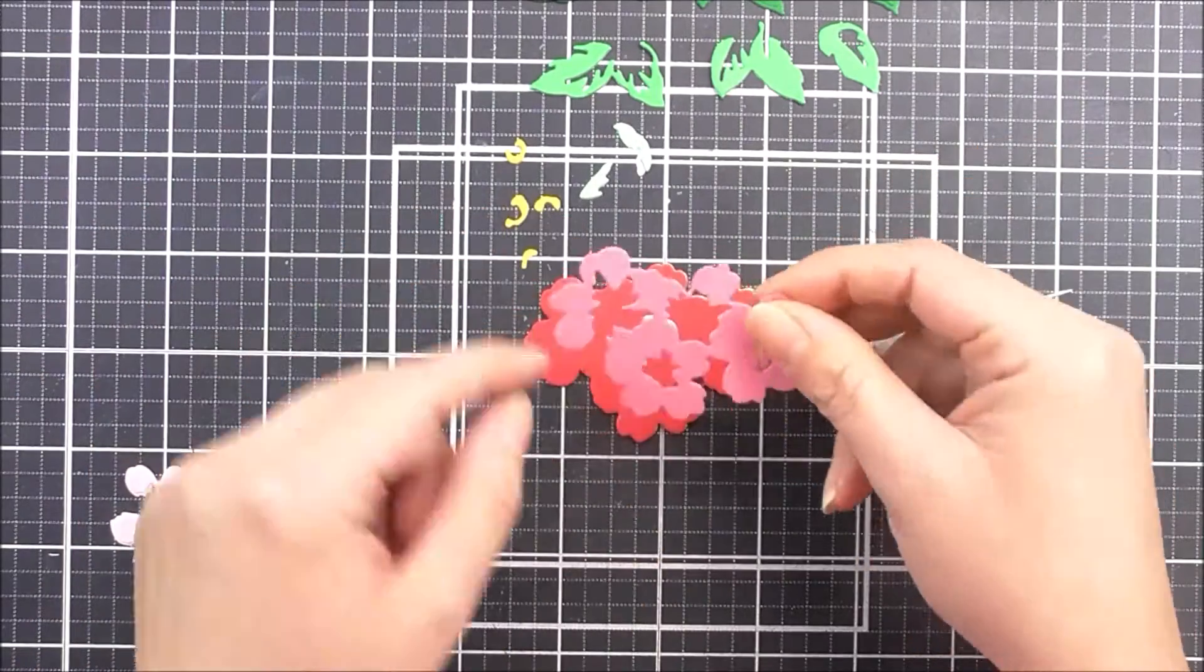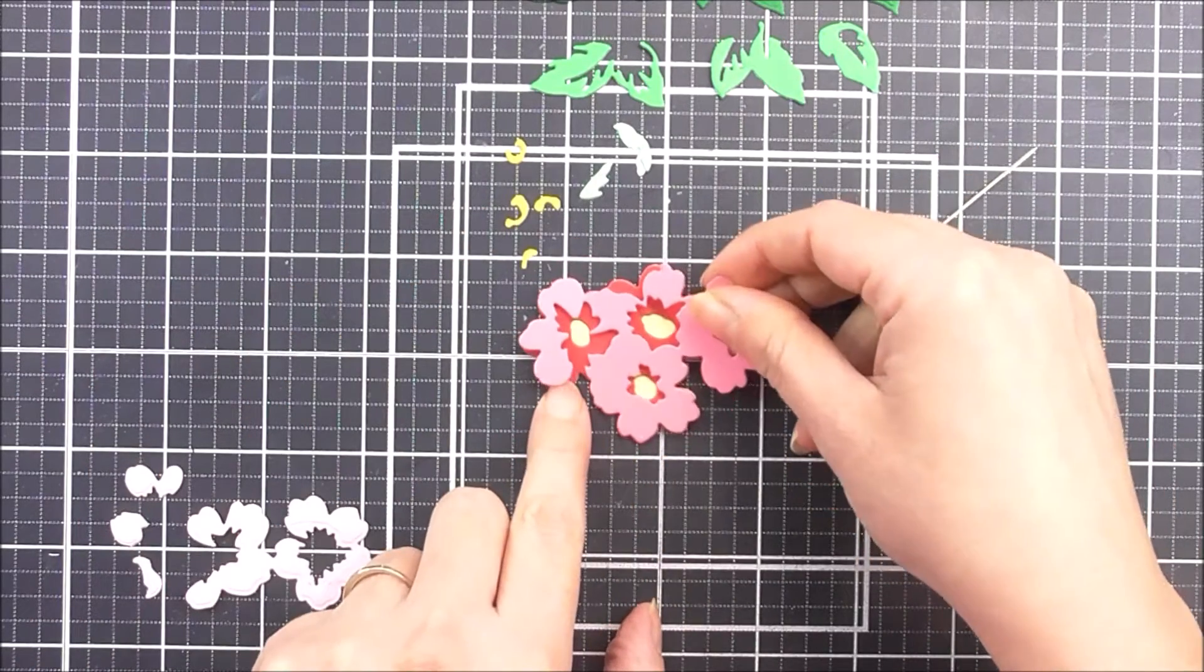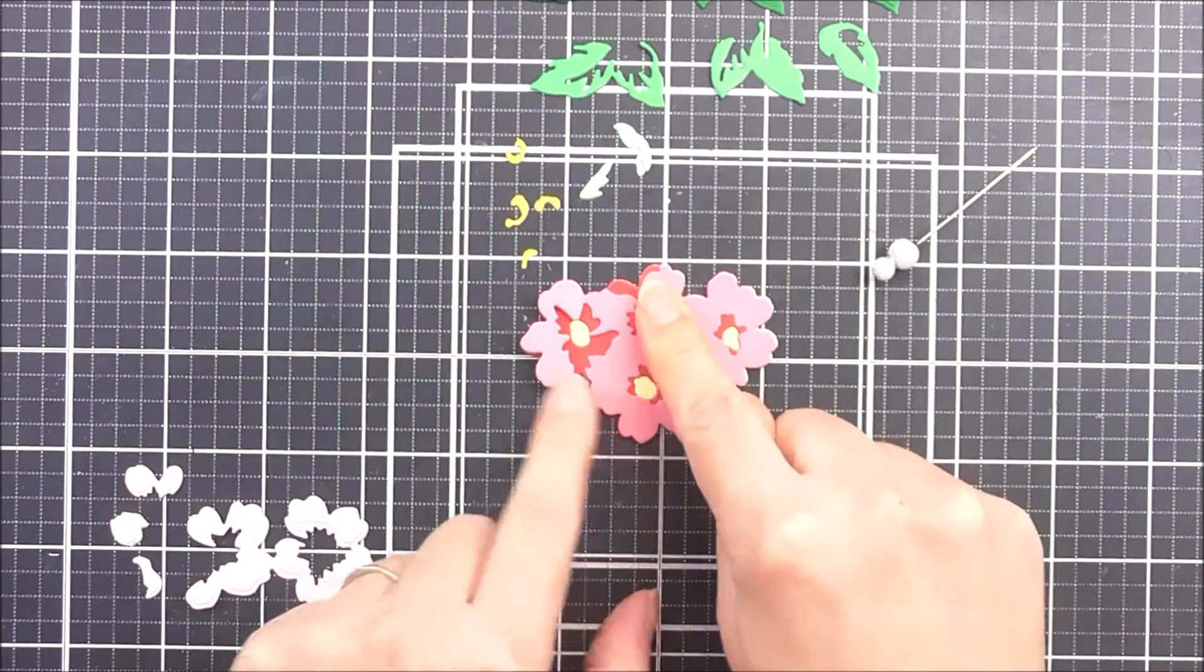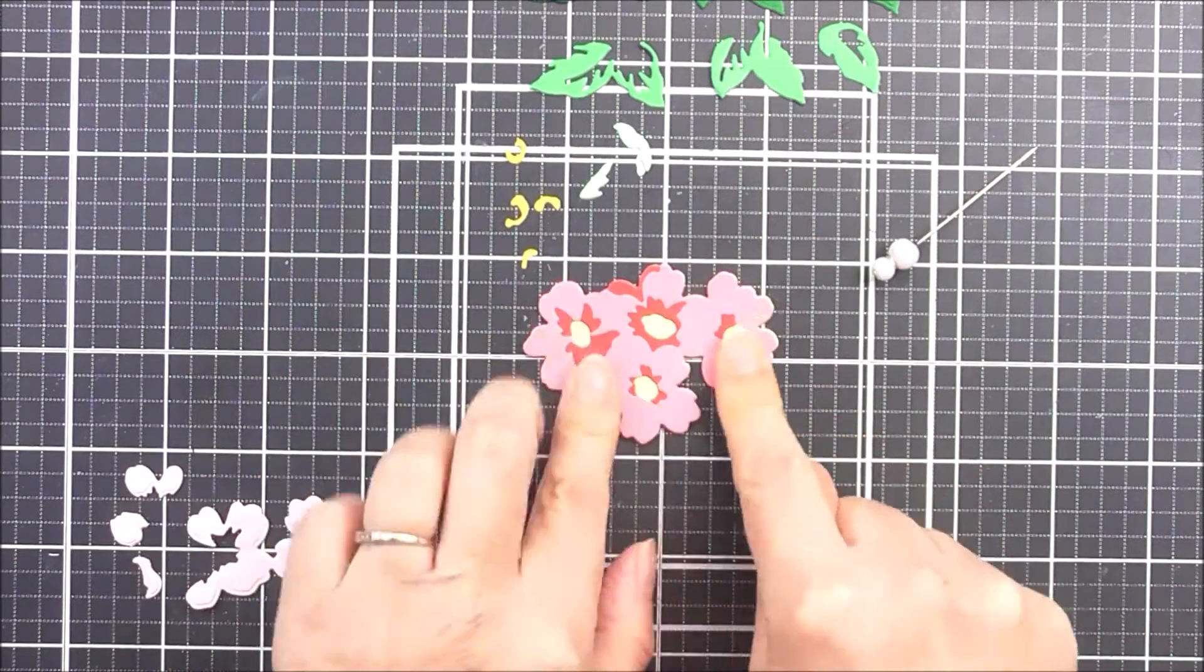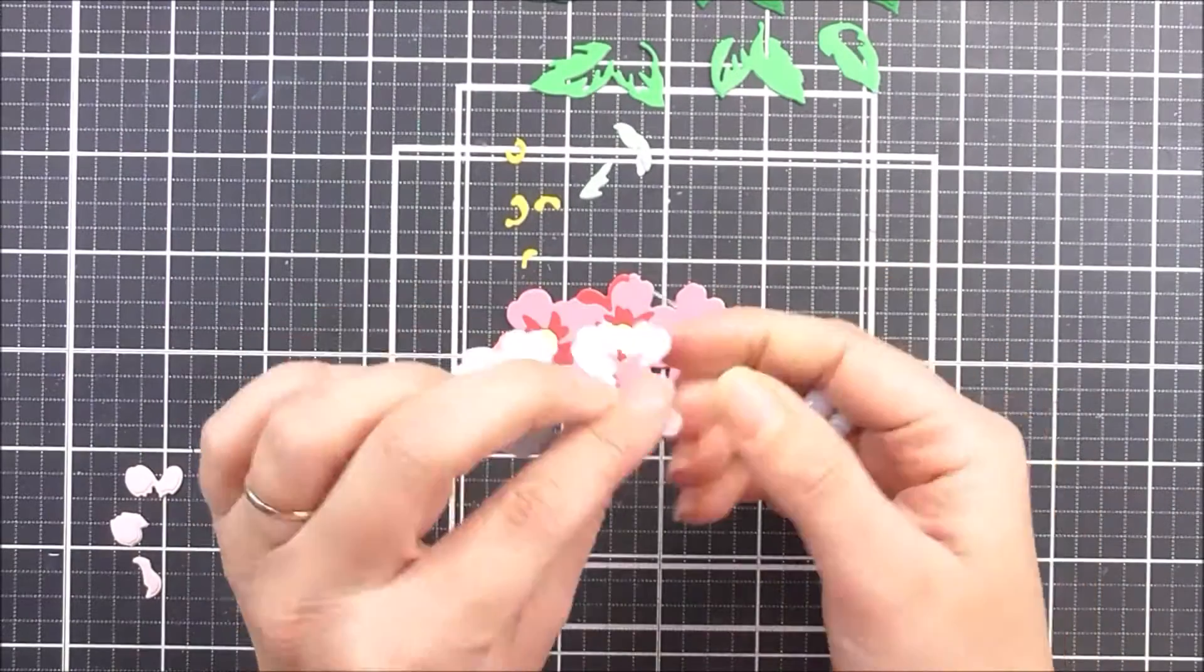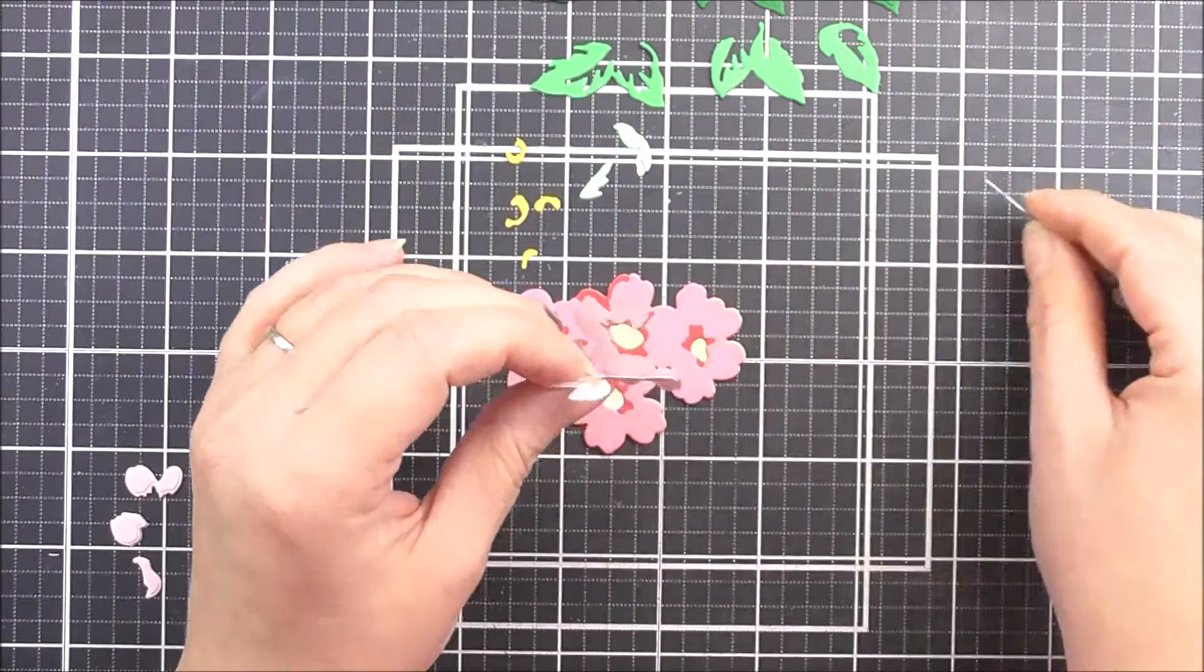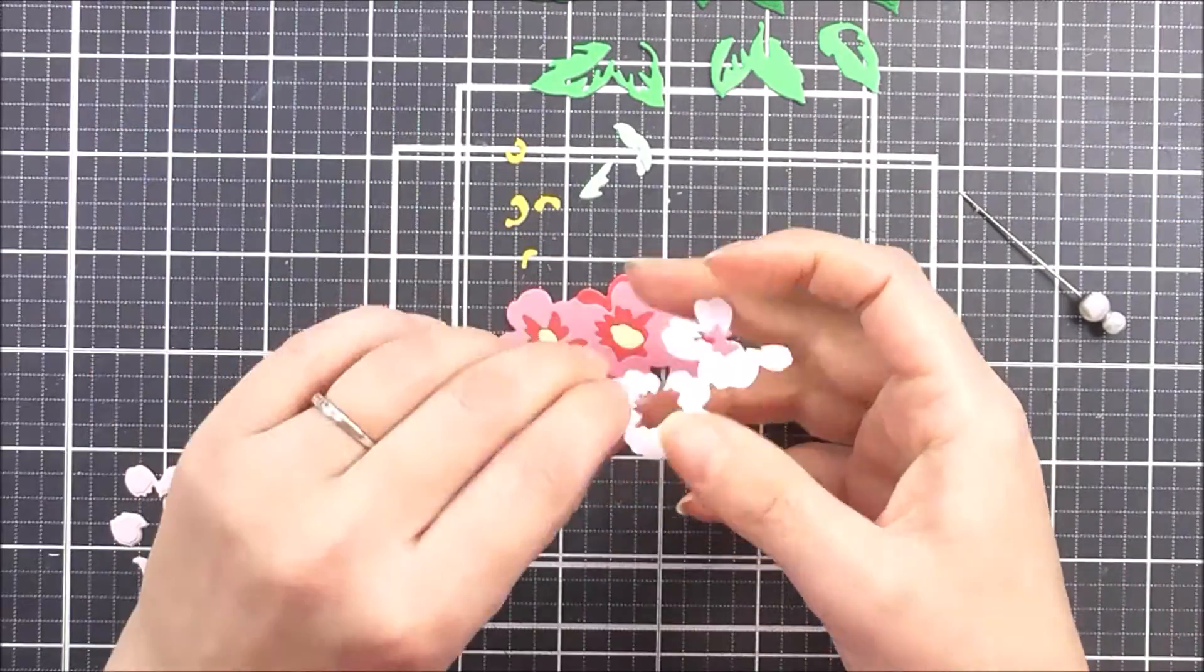For the first layer of the flowers, I use the Ruby Red and I'm just going to pop this straight on top of that base layer. The second flower layer is out of Coral Berry cardstock and I've just placed that into place around the edges. All you need to do is line up those edges and they will line up perfectly.